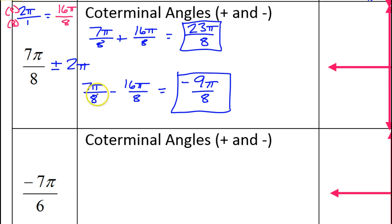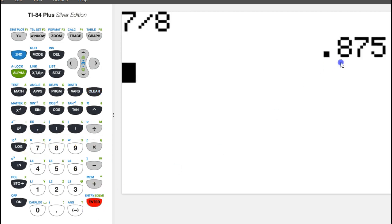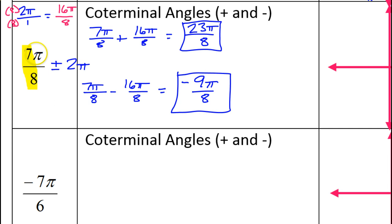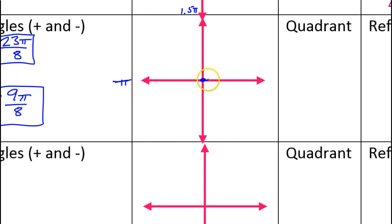Now I'm going to do the sketch. To do the sketch, it's helpful to know the decimal form. 7 divided by 8 is 0.875, so about 0.9. That means 7 pi over 8 is about 0.9 pi — a little bit less than 1 pi. We know that 1 whole pi is at 180 degrees, so we're going to draw the angle so that it stops a little bit short of pi. It should be somewhere in the second quadrant.